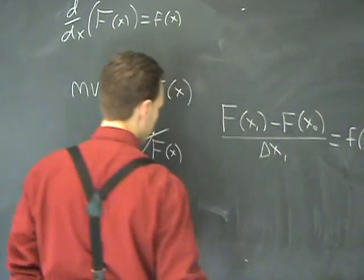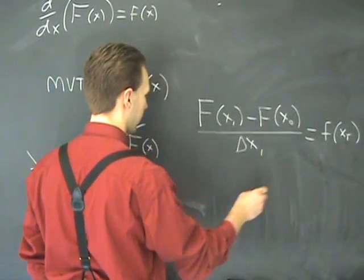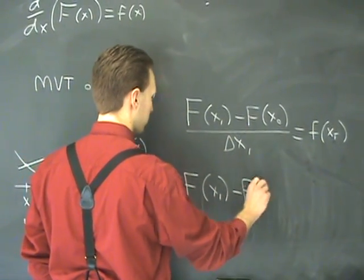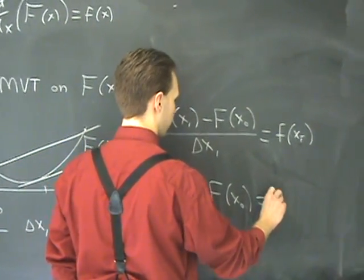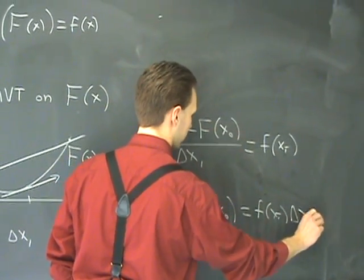If you take this and multiply both sides by Δx₁, you get big F of x₁ minus big F of x₀ equals little f of x₁ bar times Δx₁.